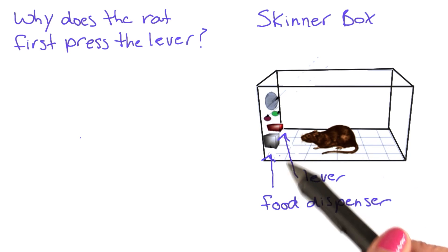When that first occurrence happens, we can deliver a food pellet to the rat. But how do we get the rat to press the lever again?